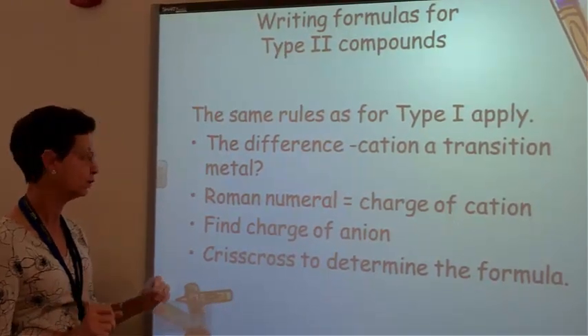So we must look for that Roman numeral to find that charge. The charge of the anion can be found in the traditional way, looking at the periodic table with the numbers. And then we simply crisscross to determine the formula. All right, we're going to try some work here.